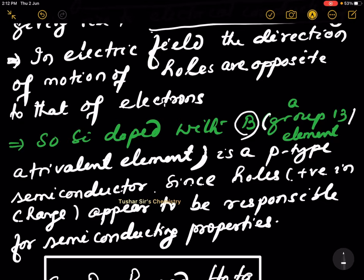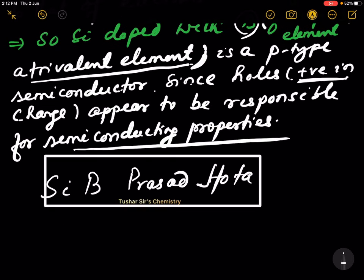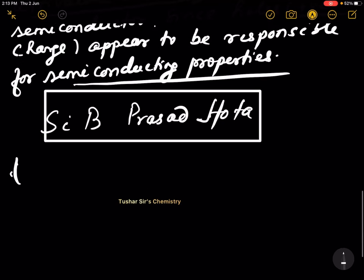Silicon doped with boron, a group 13 element or you can say trivalent element, is a P-type semiconductor. So, when silicon doped with boron, you will get a P-type semiconductor. Since holes positive in charge appear to be responsible for semiconducting properties, here holes are positively charged. So, a trick is there.